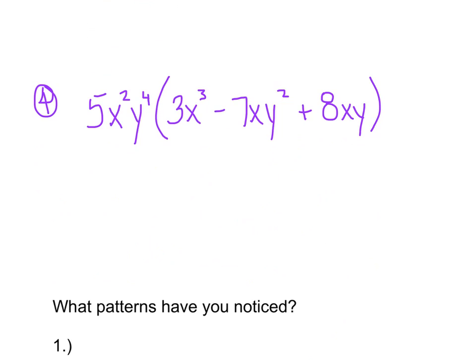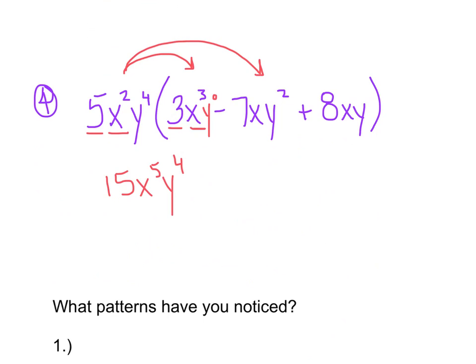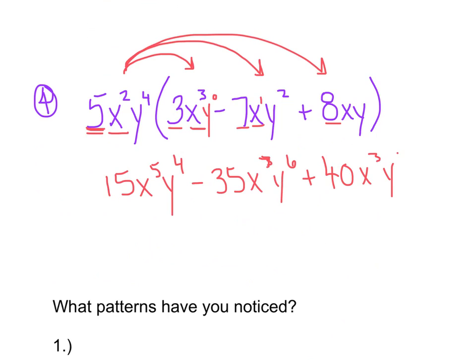Moving right along. Focus on distributing again. Multiply the numerical coefficients to get 15, then add powers for like terms: 2 plus 3 gives x to the 5th, and there's an invisible y to the 0, so 4 plus 0 gives y to the 4th. Distribute a second time: 5 times 7 gives negative 35, producing x to the 3rd and y to the 6th. Distribute a third time: coefficients give 40, and we get x to the 3rd and y to the 5th, using invisible powers of 1.